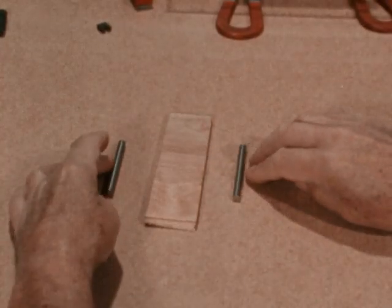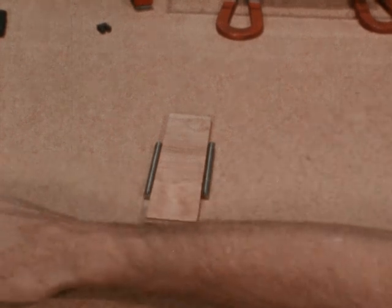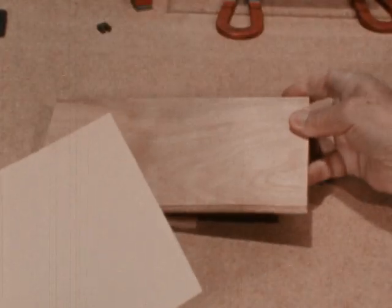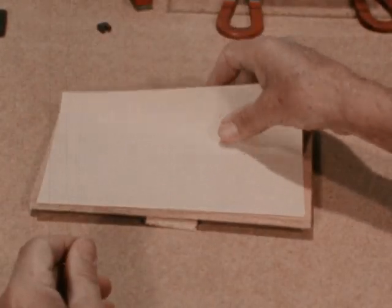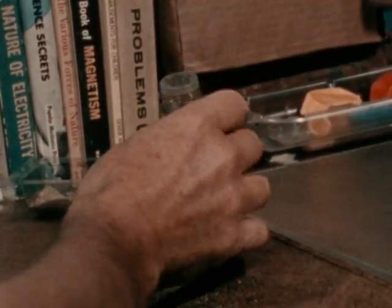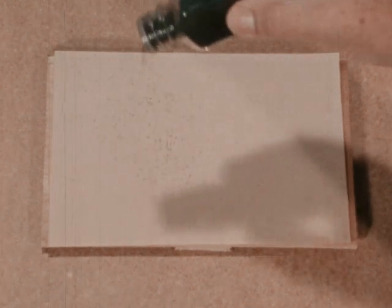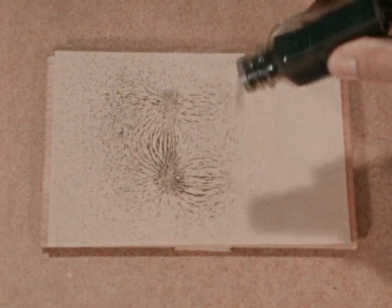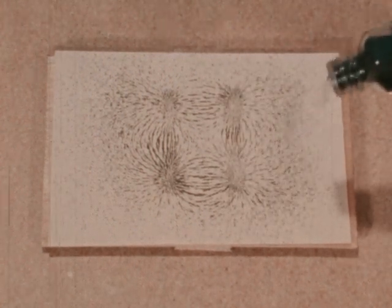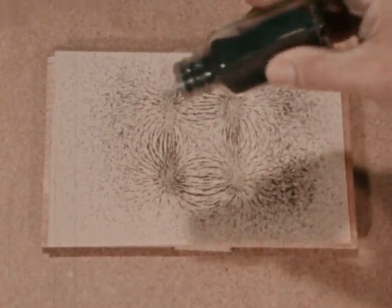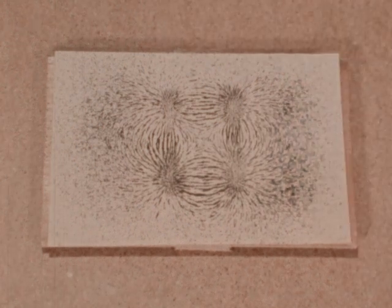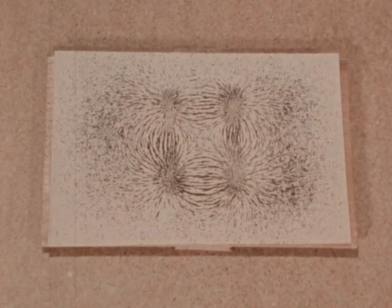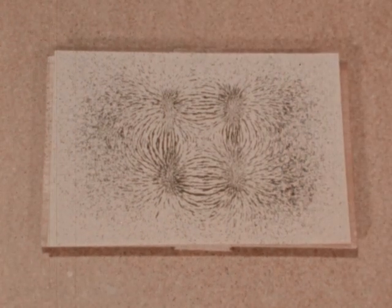Put a paper card on top of two magnets with a thin piece of wood separating the paper from the magnets. Then sprinkle some iron filings on the card. If you sprinkle them evenly, you'll soon see that the filings form into the pattern of the magnetic field that surrounds these magnets. This pattern tells us some things about the lines of magnetic force.